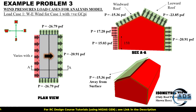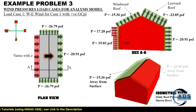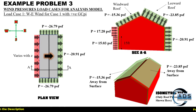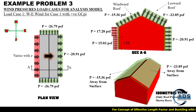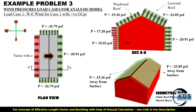The windward roof pressure is away from the surface, and the leeward roof pressure is also away from the surface. Both pressure magnitudes carry a negative sign. In the isometric view we have only shown the roof pressures.